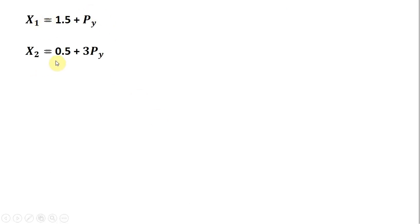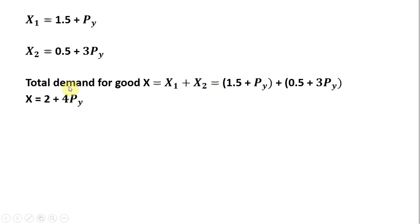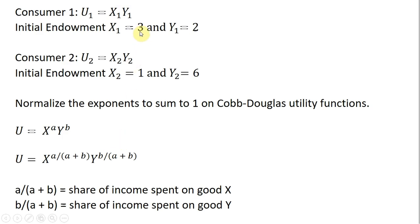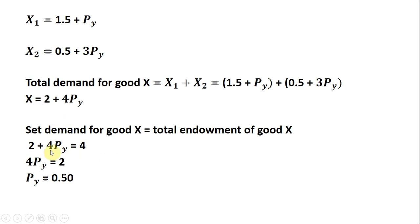With consumer 1 and consumer 2's demands for good x, we add them together to get aggregate demand. Substituting x₁ and x₂, and simplifying, total demand for good x equals 2 plus 4 times the price of good y. We then set total demand equal to the total endowment of good x, which is 4 — consumer 1 had 3 units and consumer 2 had 1 unit. Solving for the price of good y, we get a price of good y equal to 0.5.